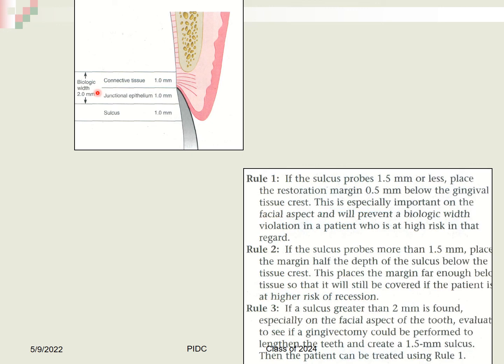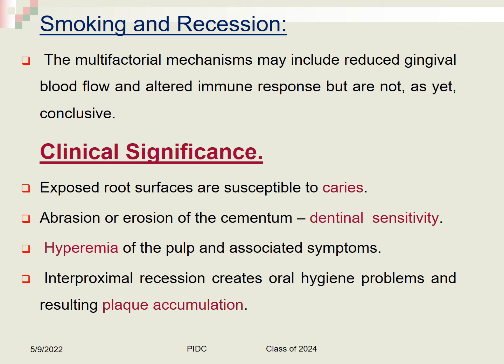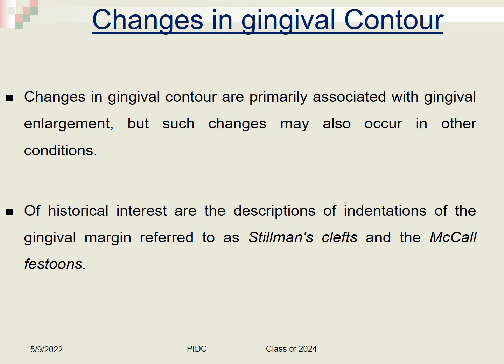Biologic width is the distance between the junctional epithelium and the connective tissue, generally 2 mm. If this area is violated during restoration placement, gingival recession can occur. Smoking may also cause recession, though exact significance has not been fully proven. Clinical significance of recession includes root surface caries, abrasion, erosion, dental hypersensitivity, hyperemia of the pulp, interproximal hygiene problems leading to plaque accumulation, and changes in contour associated with gingival enlargement.